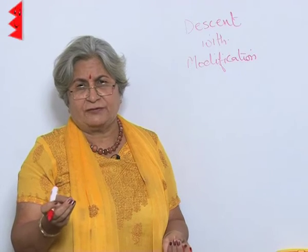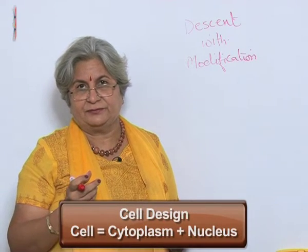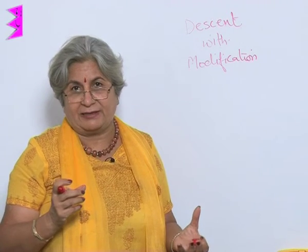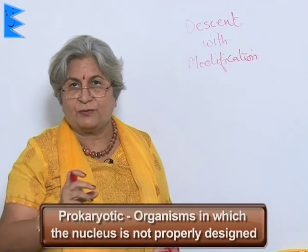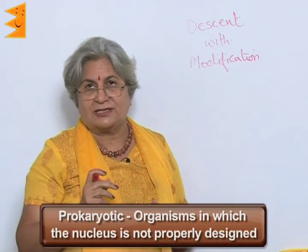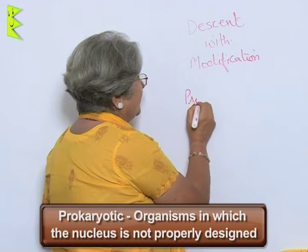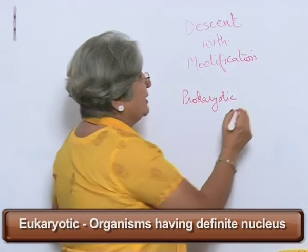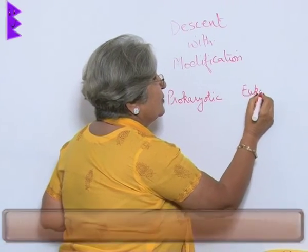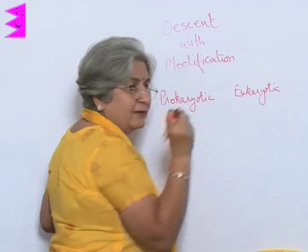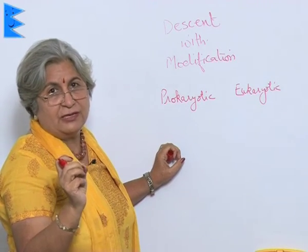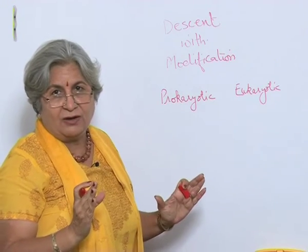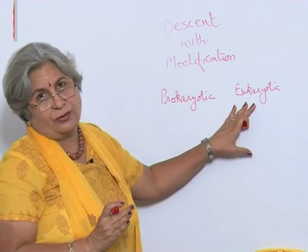The first most obvious feature is the cell design. A cell is made up of cytoplasm and nucleus. There are some organisms like bacteria in which the nucleus is not properly designed — it is not perfect. Such organisms are called prokaryotic, while the ones which have a definite nucleus and definite cell organelles are called eukaryotic. So, on one basic feature — the type of nucleus — we have classified living organisms as prokaryotic or eukaryotic.